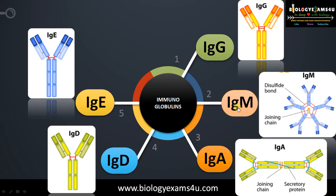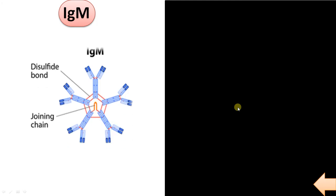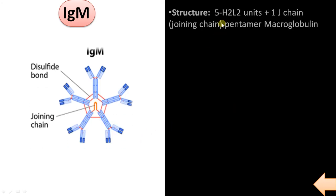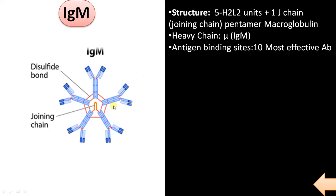Moving to the second type of immunoglobulin, IgM. IgM is a pentamer. The structure is 5 H2L2 units—1, 2, 3, 4, and 5—joined by a J chain, which is a joining chain. It's a macroglobulin, the largest immunoglobulin. Its heavy chain is mu, and it has 10 antigen binding sites, making it the most effective immunoglobulin. In each subunit there are two antigen binding sites, so in total 10 antigen binding sites for IgM.